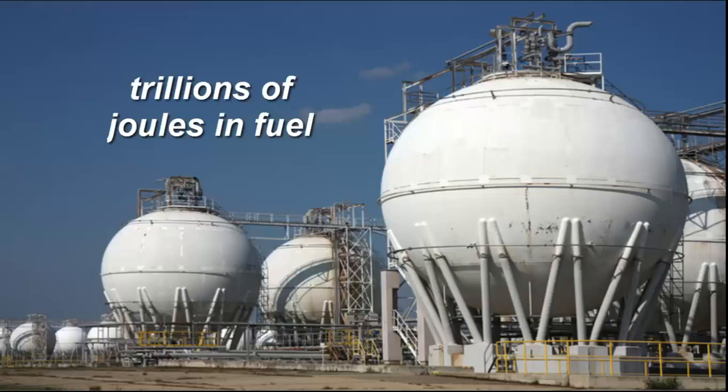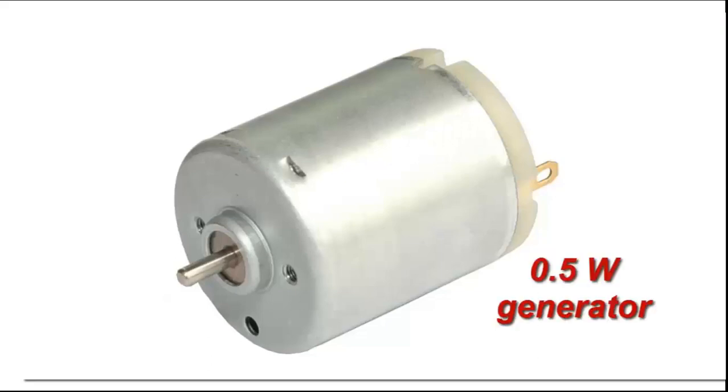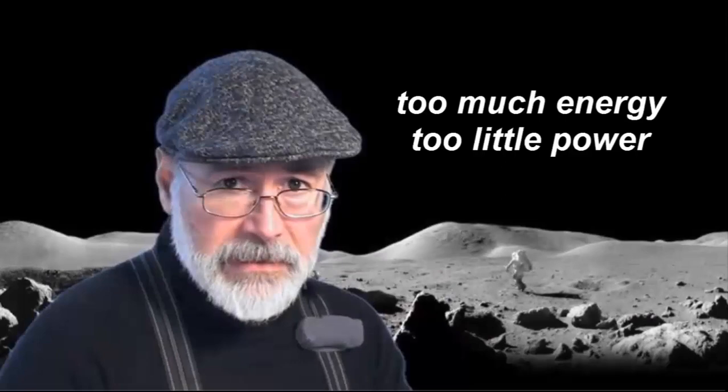We are left with just a few dollars to purchase a tiny half a watt electric generator. That is, a generator that can convert mechanical energy to electric energy at a maximum rate of half a joule every second. Out of all the gazillion joules stored in those tanks, we can convert only half a joule every second to feed the city. We are in a situation in which we have too much energy but very little power.